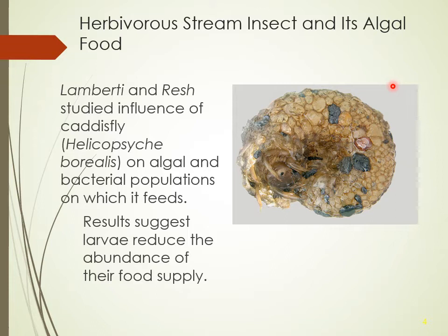There were so many of these caddisflies growing and living in summer and fall that you could get over 4,000 individuals per square meter in Sulfur Creek in California — about a quarter of all things living on the stream bottom. The researchers thought they must be running out of food and competing for it, and that they could possibly reduce their food supply by overeating.